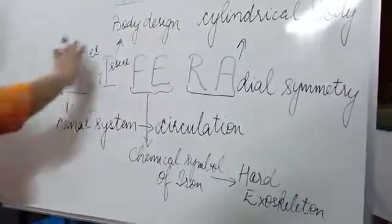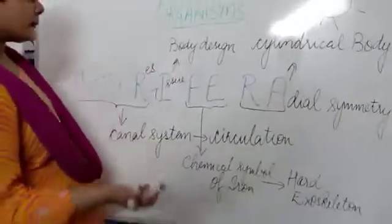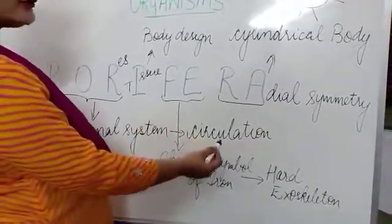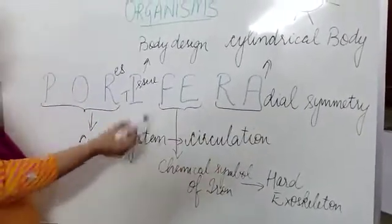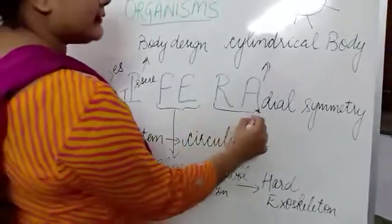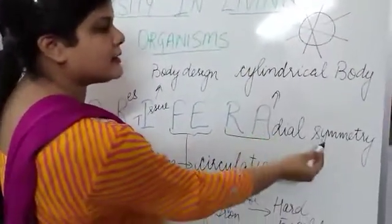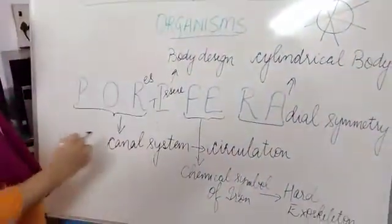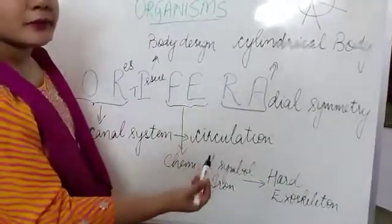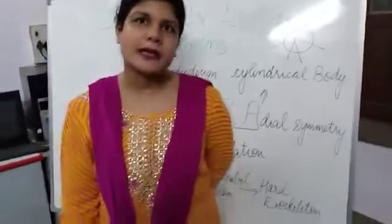So from the word Porifera we have learned the basic characteristics of all organisms included in Porifera. Let us revise them once again. First, P-O-R tells us the body is made up of pores or holes that form the canal system, which helps in circulation of food and water. Second, they have tissue level of body design — no organ or organ system is found. Third, they show radial symmetry, meaning any axis you cut the organism you always find two equal halves, because they have a cylindrical body. And last, from the alphabets F-e — the chemical symbol of iron, a hard metal — we remember that all Porifera have a hard exoskeleton.